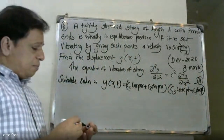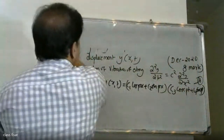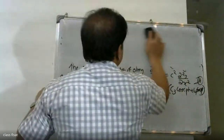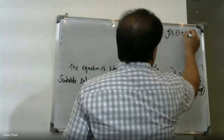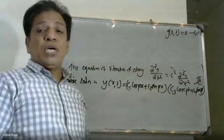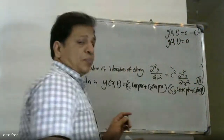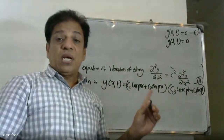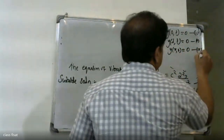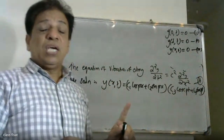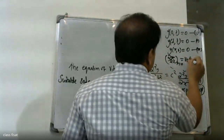Now we apply the boundary conditions. The boundary conditions are: y(0,t) = 0 — the string is initially in the equilibrium position. Also, each point is given velocity v₀ sin³(πx/a), so y(0,t) = 0.